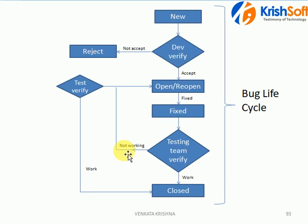If the issue is not working according to the requirement, from the testing side we change the status to 'reopen'. This means we retested the bug but it is not working as required, so we are reopening the same bug. When developers had originally accepted it they changed it to 'open'; now after our failed retest, we change it back to 'reopen'.